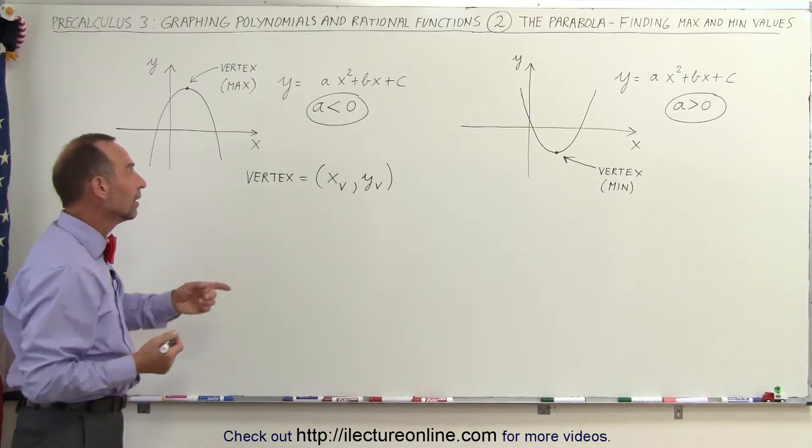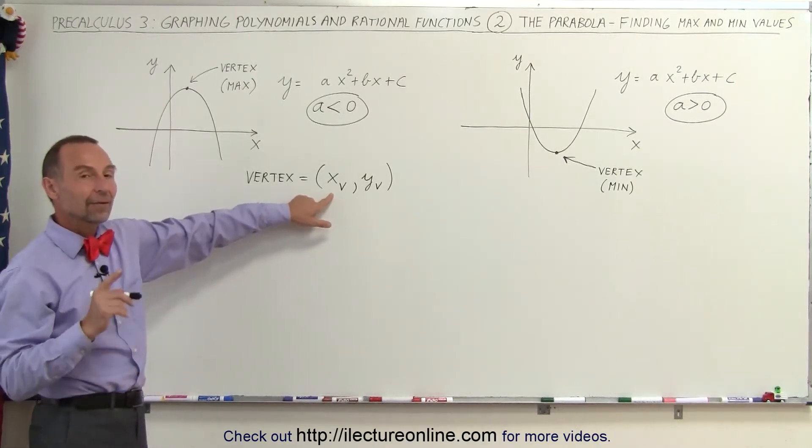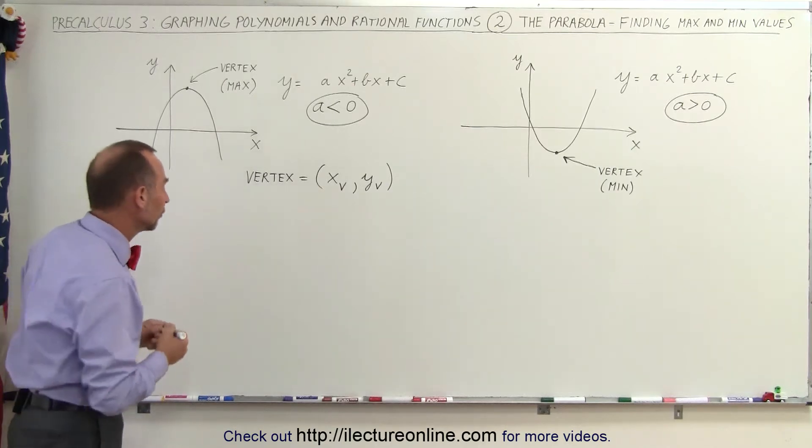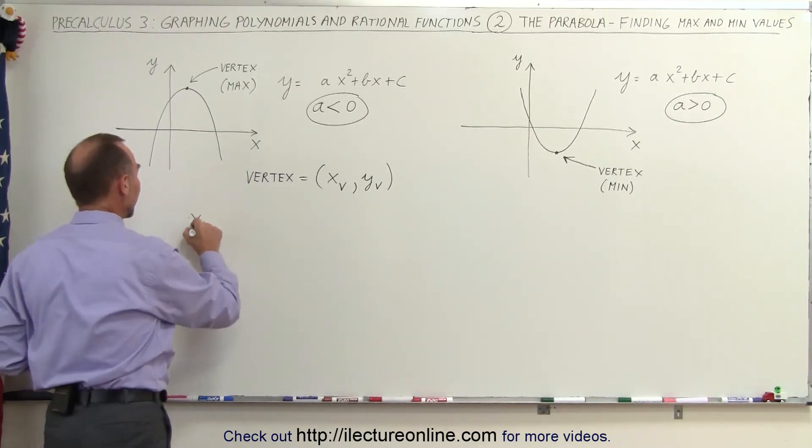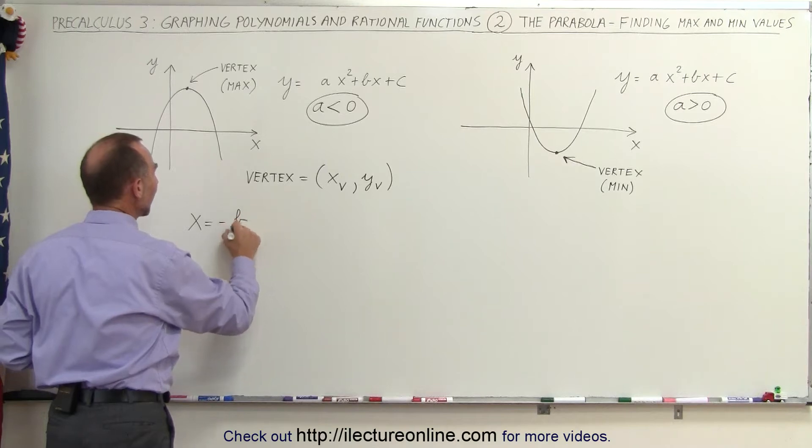How can you find that value? Well, you first find the value for the x-coordinate vertex, and to find that we have x is equal to minus b divided by 2a.